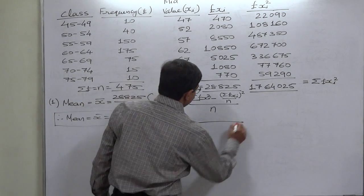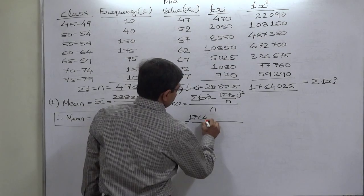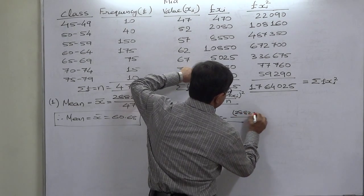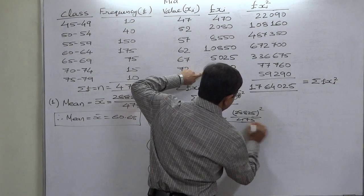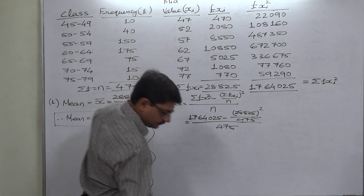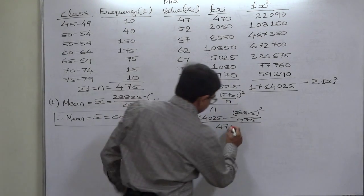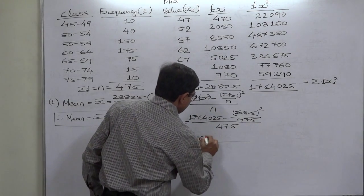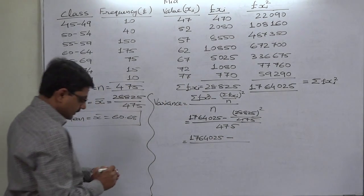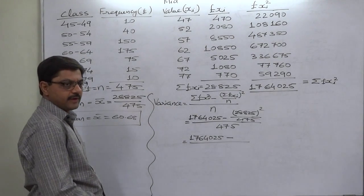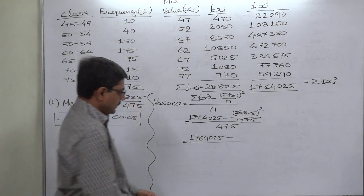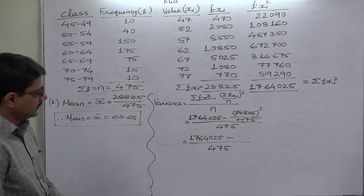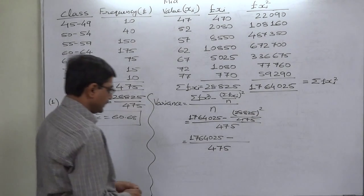Now the value minus 28,825 the whole square divided by 475, and all divided by 475. First simplify just this fraction, one or two more steps will be in our favor. 28,825 the whole square divided by 475, then subtract it from the bigger amount, and then divide the difference by 475. That will be the variance.